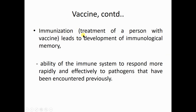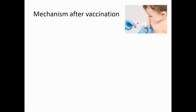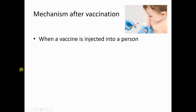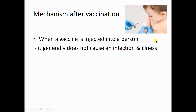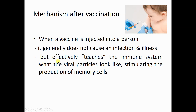Immunization — treatment of a person with a vaccine — leads to the development of immunological memory. Immune cells become activated and produce memory B cells and memory T cells. This is the ability of the immune system to respond more rapidly and effectively to pathogens that have been encountered previously. When a vaccine is injected into a person's body, it generally does not cause any infection or illness.